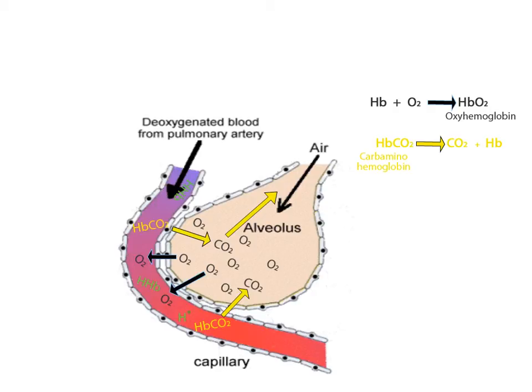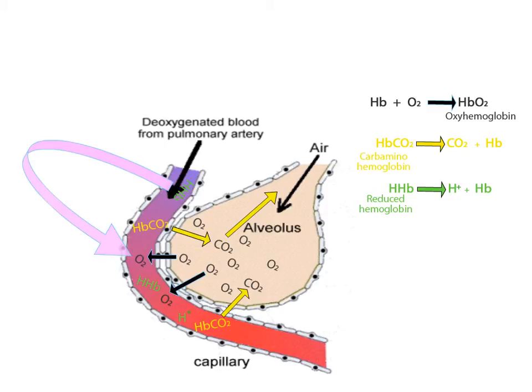Excess hydrogen ions are also carried to the lungs by hemoglobin. When hydrogen ions bind to hemoglobin, a molecule called reduced hemoglobin is formed. When reduced hemoglobin reaches the lungs, the hydrogen ion is released from the hemoglobin molecule and hemoglobin is now free to pick up oxygen.